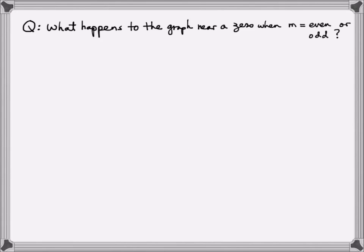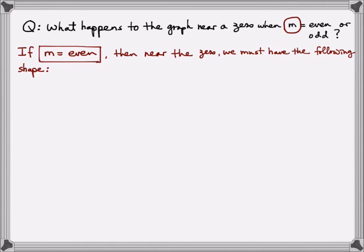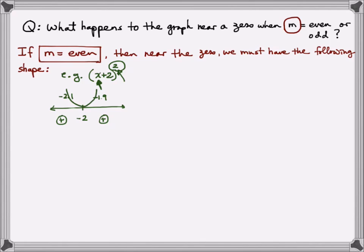Let's formally investigate what happens to the graph near a zero when the multiplicity m is even or odd. Starting with the even case: if m is even, then near that zero we have one of two shapes. For example, (x + 2)² has even multiplicity. Doing a test point analysis around the zero x = -2, if we pick the test point -2.1 on the left, we get a positive sign because any number squared is always positive. Similarly, using the right test point -1.9, we also get a positive sign.